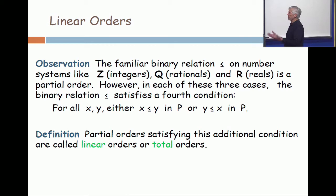A partial order that satisfies that condition is, in some sense, no longer partial. It's total. It's a linear order.